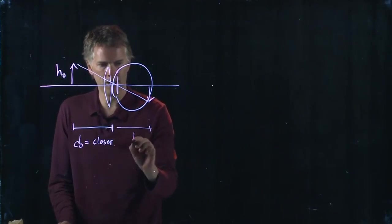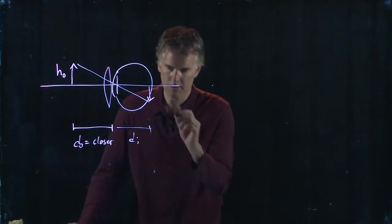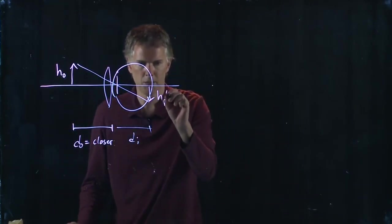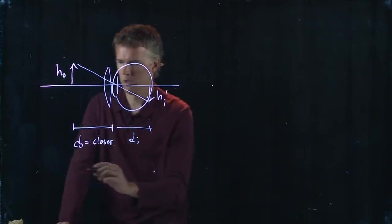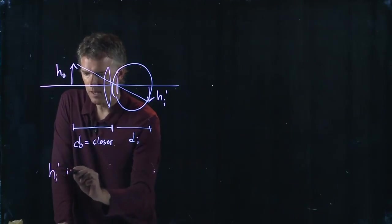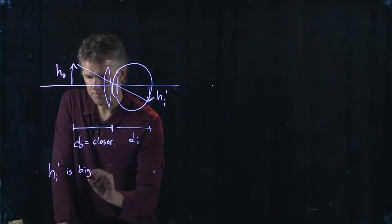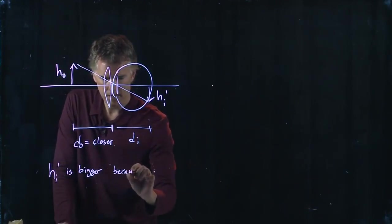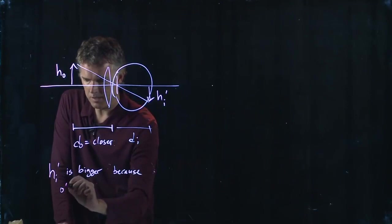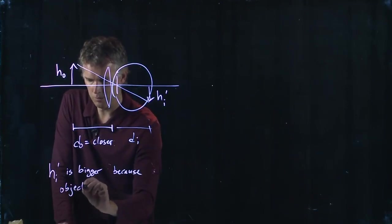D_i is the same, and let's call this the image height prime now, some new image. And h_i prime is clearly bigger. And it's just bigger because the object is now closer.